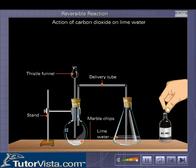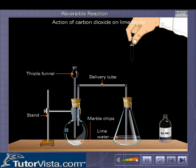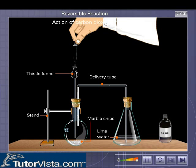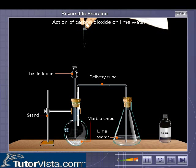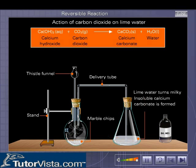Drop dilute hydrochloric acid into the round bottom flask through the thistle funnel. Brisk effervescence takes place liberating carbon dioxide gas. The gas formed bubbles into the lime water turning it milky due to the formation of insoluble calcium carbonate.